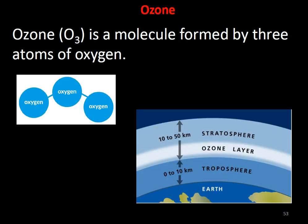Now we shall discuss ozone. Ozone is three molecules of oxygen — O₃. Ozone is formed in the stratosphere, between the stratosphere and troposphere. The surface of the earth has a troposphere up to 10 km, and ozone is present in the stratosphere from 10 to 50 km.